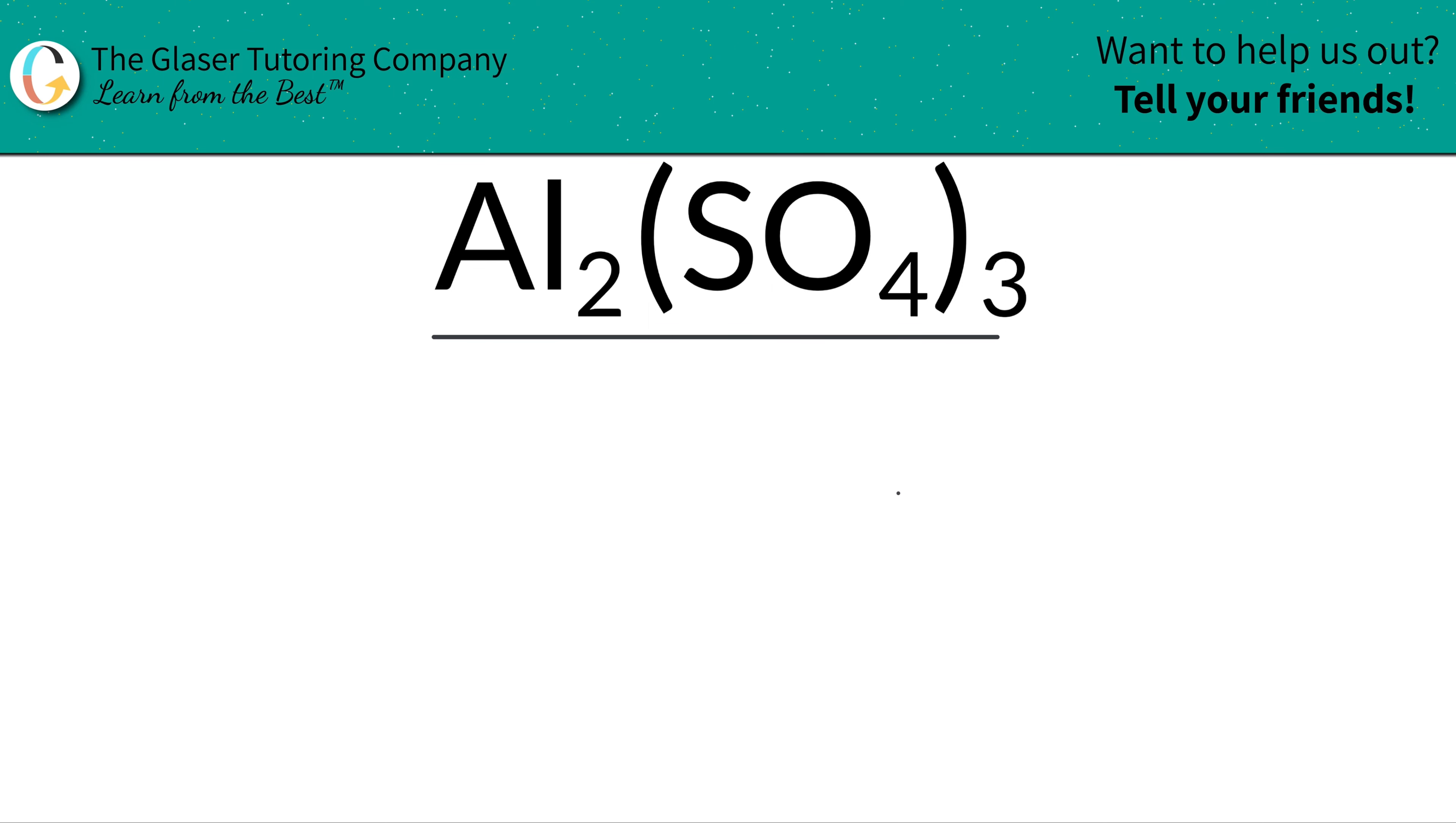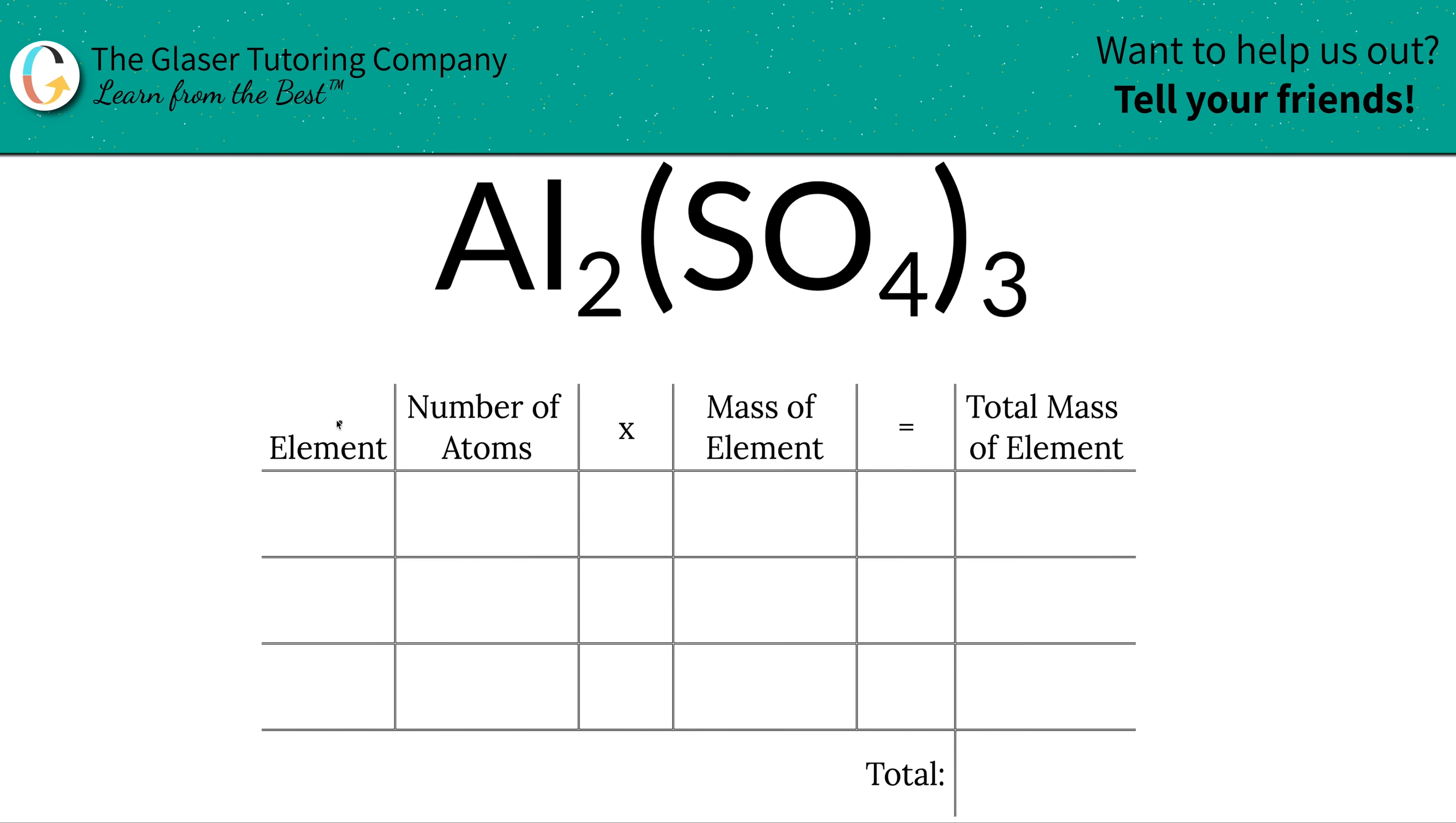So it turns out the first thing is we need to find the total mass of the compound, so let's use this table to help us out. The first thing I'm going to do is just write down the elements that I have. So I have aluminum, I have sulfur, and I have oxygen.